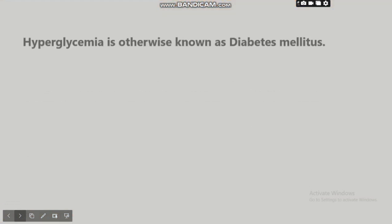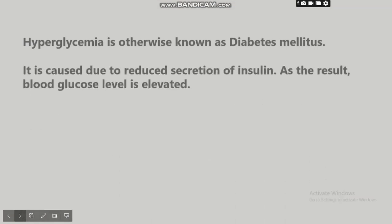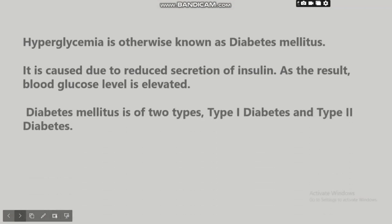Hyperglycemia is otherwise known as diabetes mellitus. It is caused due to reduced secretion of insulin; as a result, blood glucose level is elevated. Diabetes mellitus is of two types: Type 1 diabetes and Type 2 diabetes.